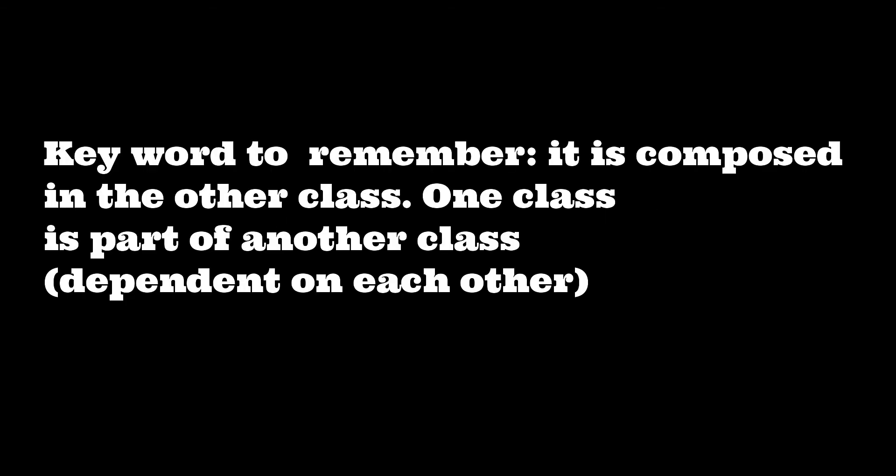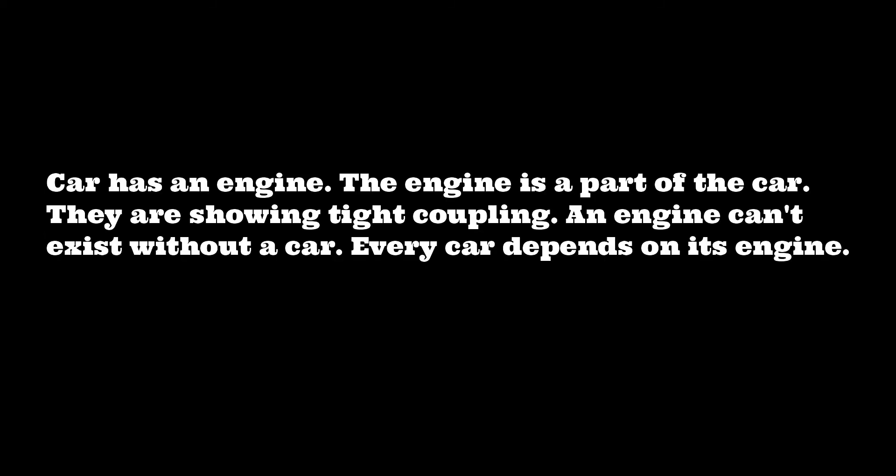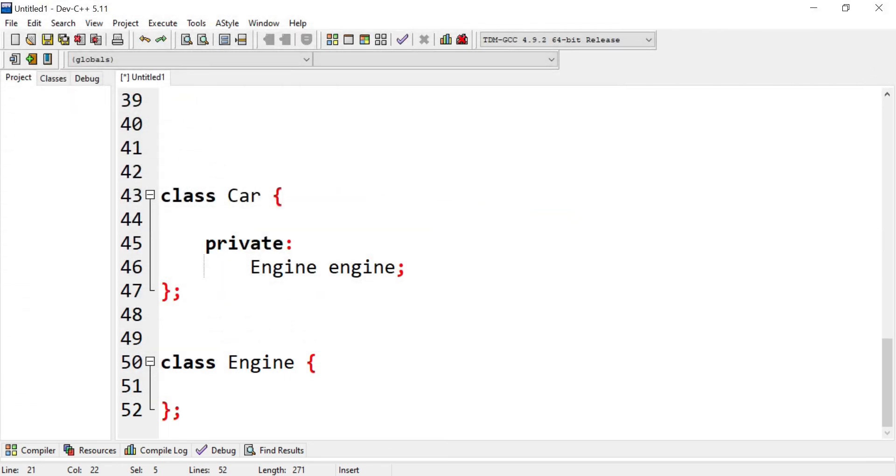A keyword to remember composition is the word 'composed' — one class is composed in another class, dependent on each other. The example here is a car and an engine. The engine is part of the car; they show tight coupling. An engine can't exist without a car, and every car depends on its engine.